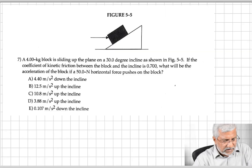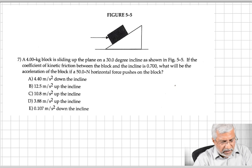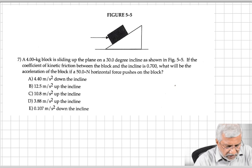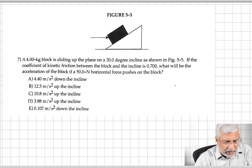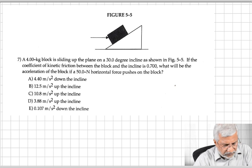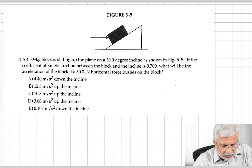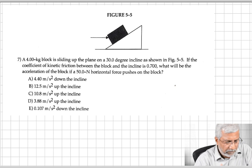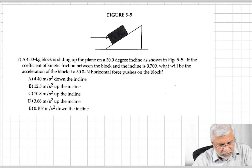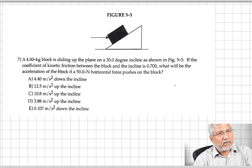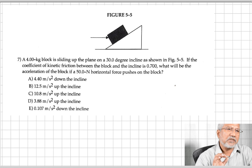The first question talks about a 4-kilogram block sliding up a plane on a 30-degree incline. If the coefficient of kinetic friction between the block and the incline is 0.700, what will be the acceleration of the block if a 50-newton horizontal force pushes on the block?